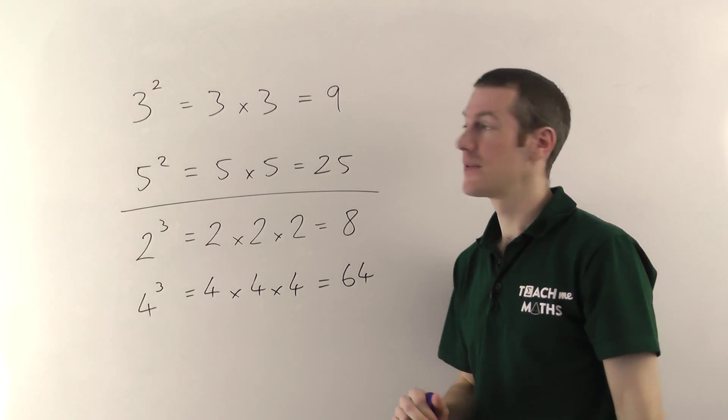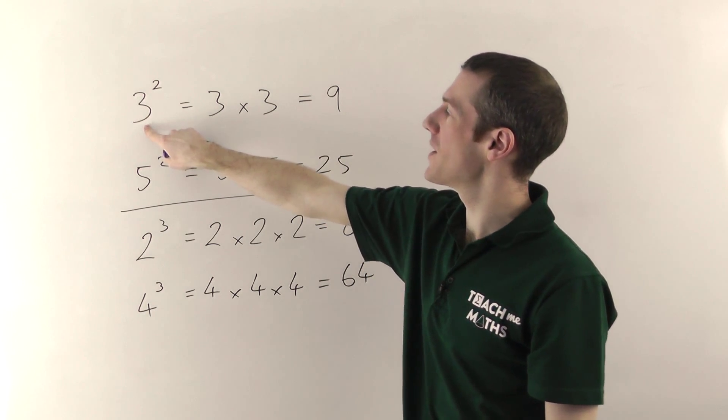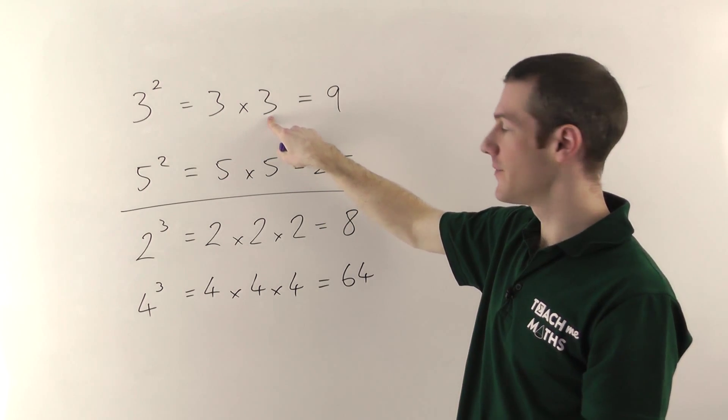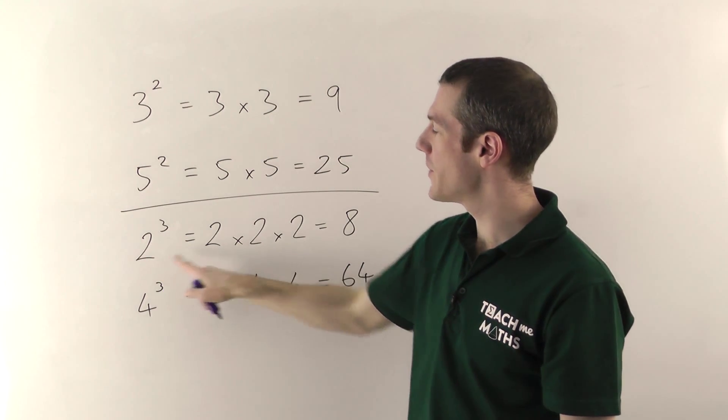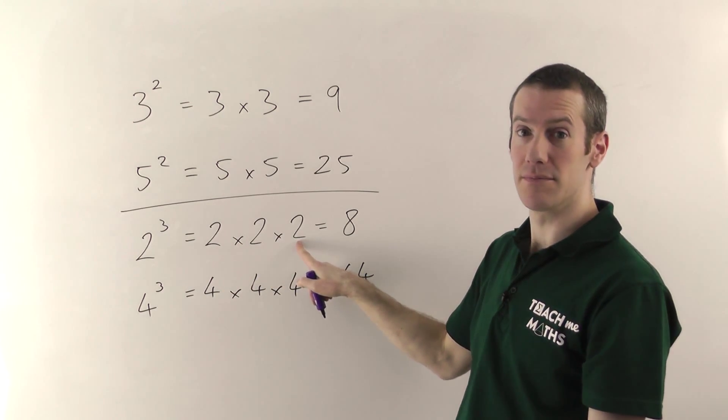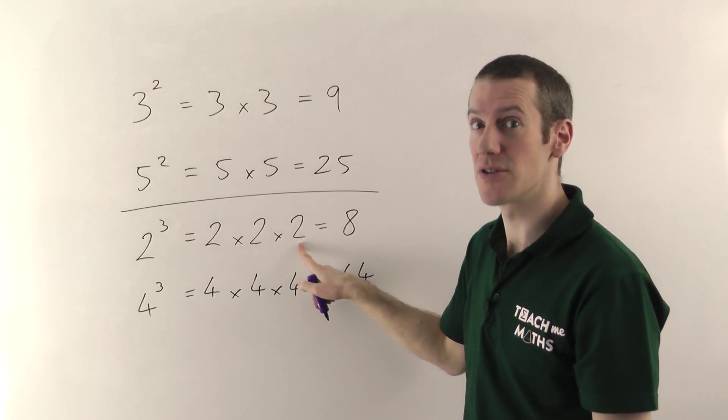And that's how you cube. So squaring means whatever the base number is, times it by itself. If you're cubing, whatever the base number is, you times it by itself so that there are 3 of them multiplying. 2 times 2 times another 2.